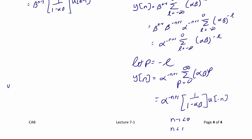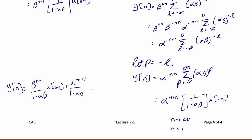Finally, the complete answer is the sum of these two cases: y[n] = β^(n−1)/(1 − αβ) · u[n−1] + α^(−n+1)/(1 − αβ) · u[−n]. This concludes today's lecture on the discrete convolution sum.